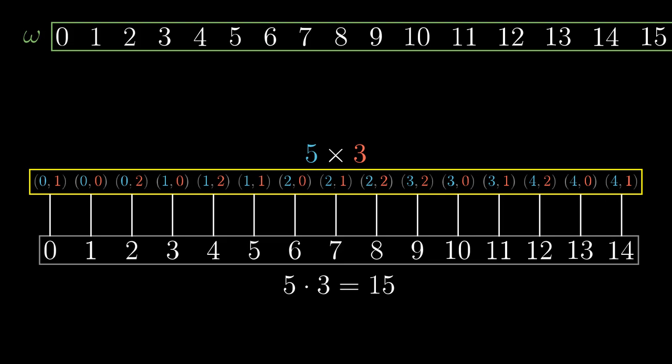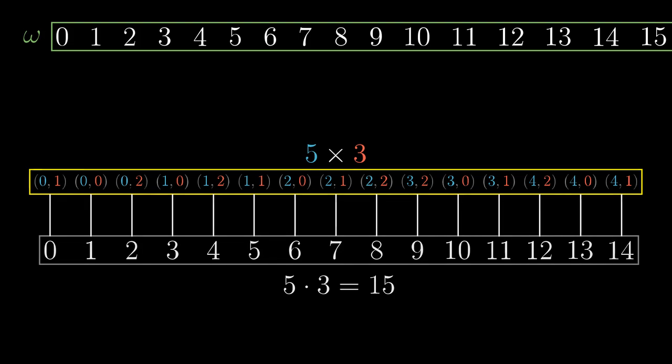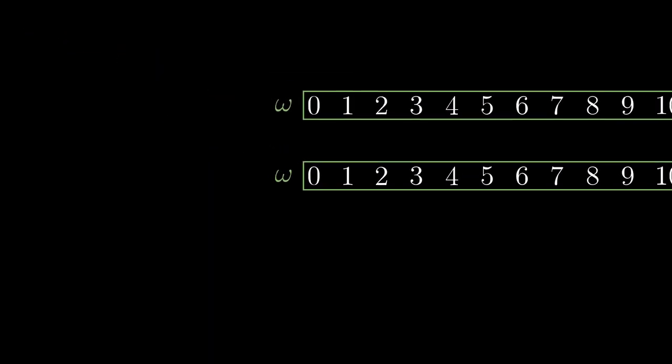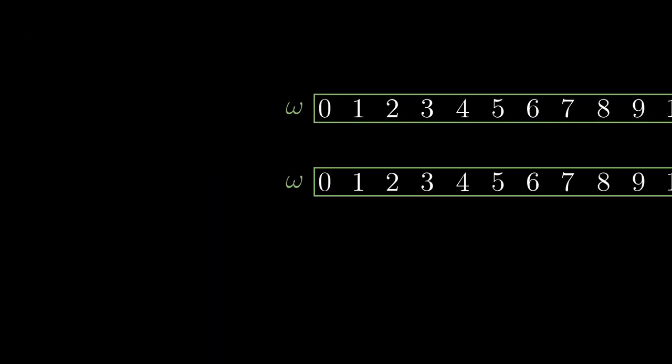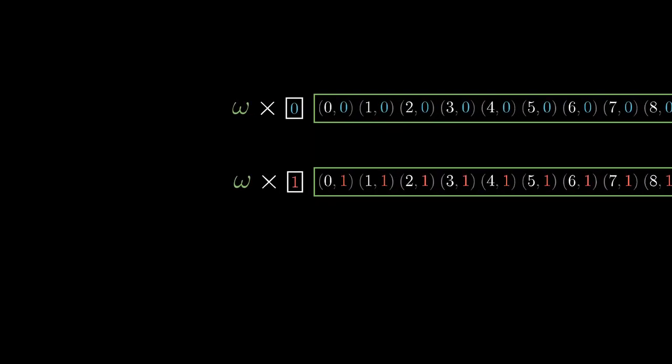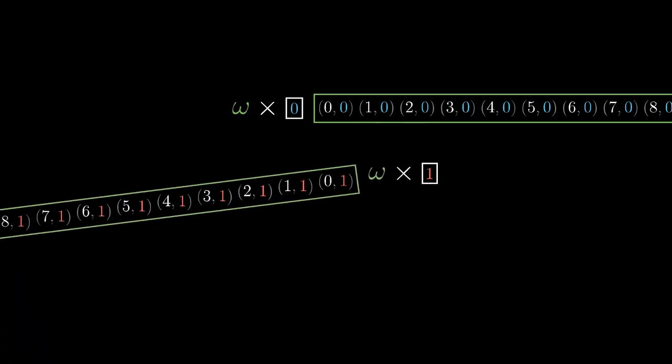Now we extend natural numbers to integers in a quite straightforward manner. We take two copies of natural numbers. Similarly to when we've calculated the addition, we add 0 to one copy and 1 to the other copy. The numbers with 0 will be interpreted as non-negative and the numbers with 1 as negative.